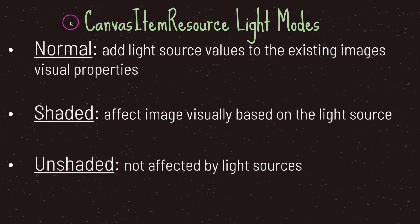Next let's take a look at the light mode property. The light mode property comes in three different options: the first is normal, the second is shaded, and the third is unshaded. By default light mode is set to normal. When set to normal you will add a light source value onto the existing image's visual properties — basically you are telling the image how it should react to the Light2D node. Now if you change the light mode to shaded, your image will be visually affected based on the light source.